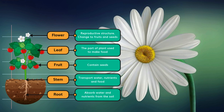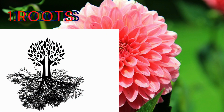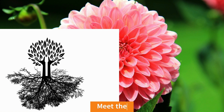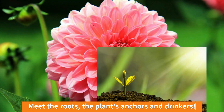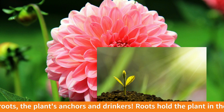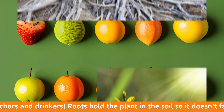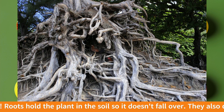Roots: anchors and drinkers. Meet the roots — the plant's anchors and drinkers. Roots hold the plant in the soil so it doesn't fall over. They also drink water from the soil and give it to the rest of the plant.